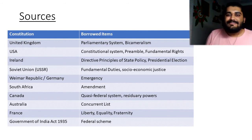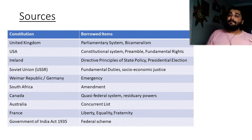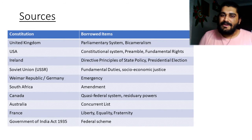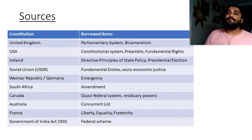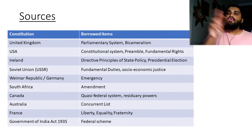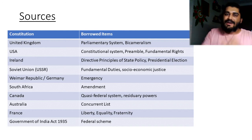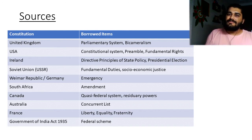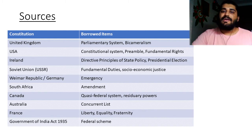From the United Kingdom, they took the parliamentary system because the British had already established a system of governance in India and they continued with that. They took the British parliamentary system and also the bicameral form of parliament — there are two houses to the parliament: the Lok Sabha and the Rajya Sabha, or at the state level, the Vidhan Sabha and the Vidhan Parishad. This bicameral parliamentary system is something that we took from the British.